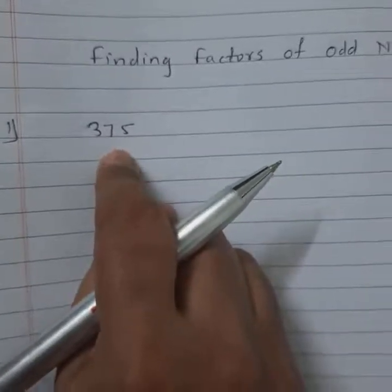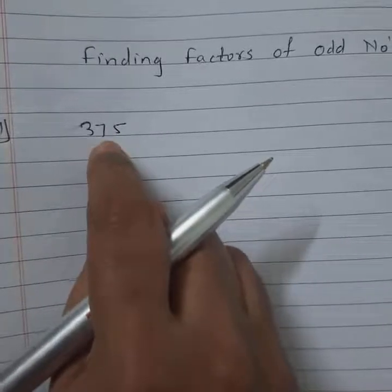Here we use the divisibility rule of 5 and divide this number by 5 to get factors of this number.